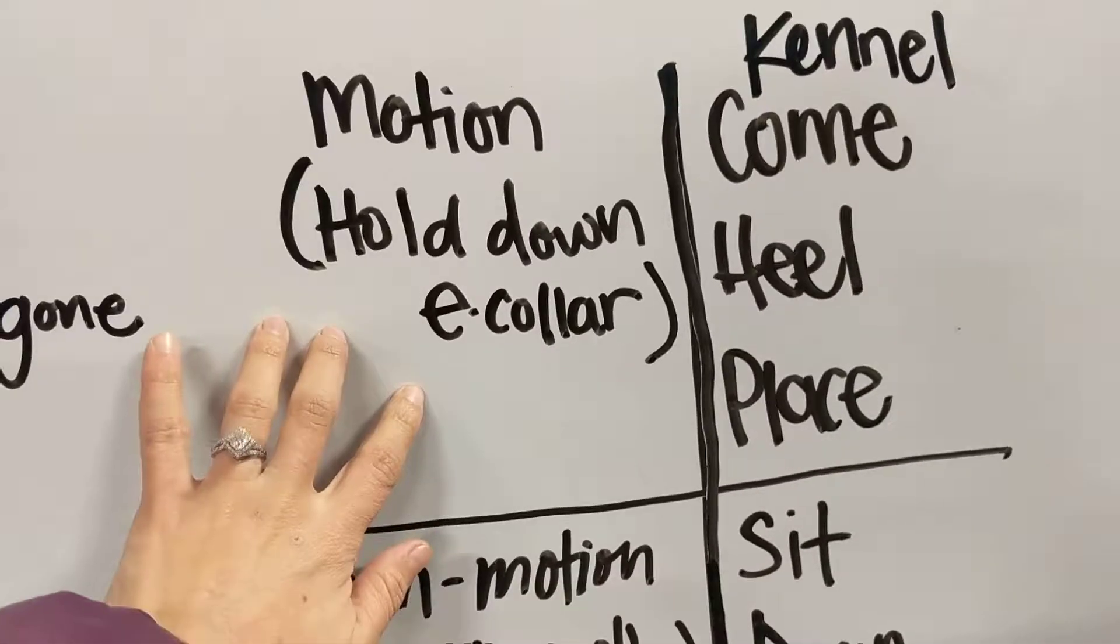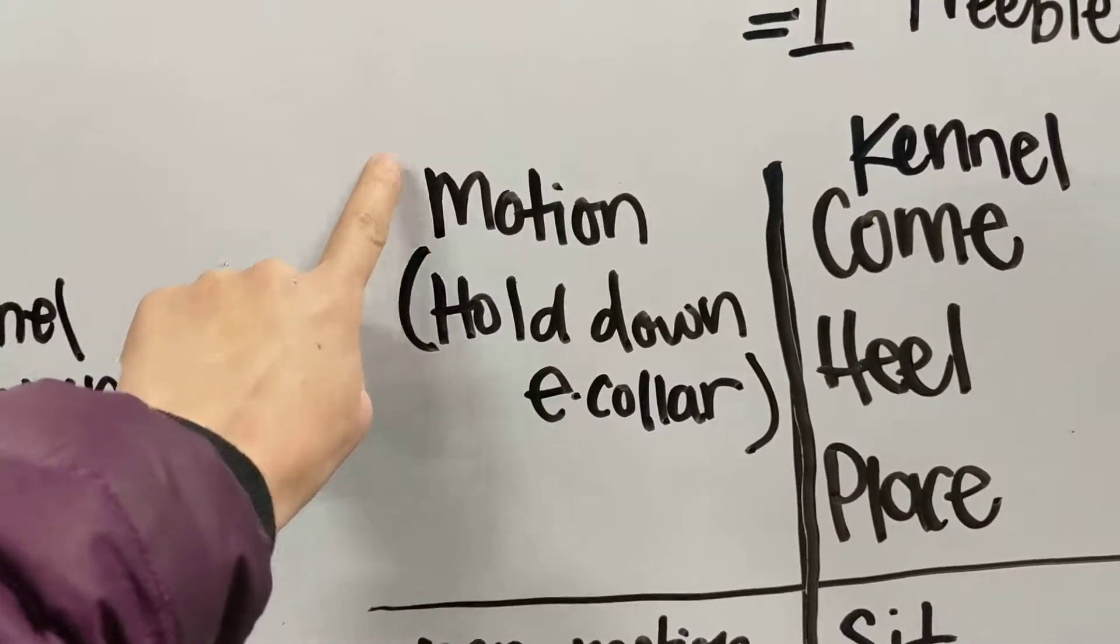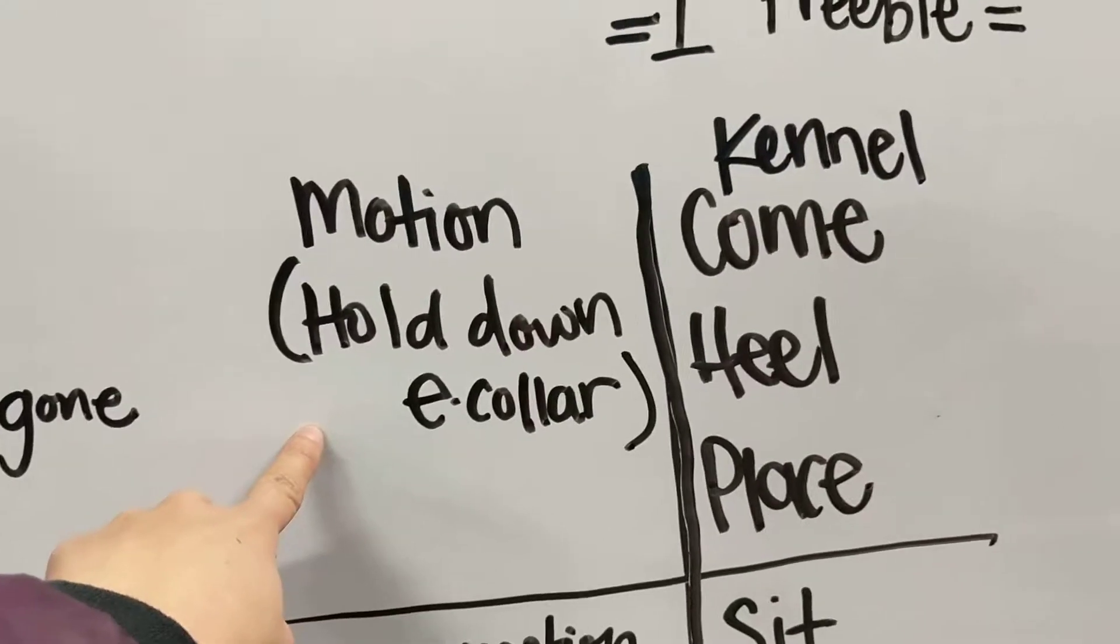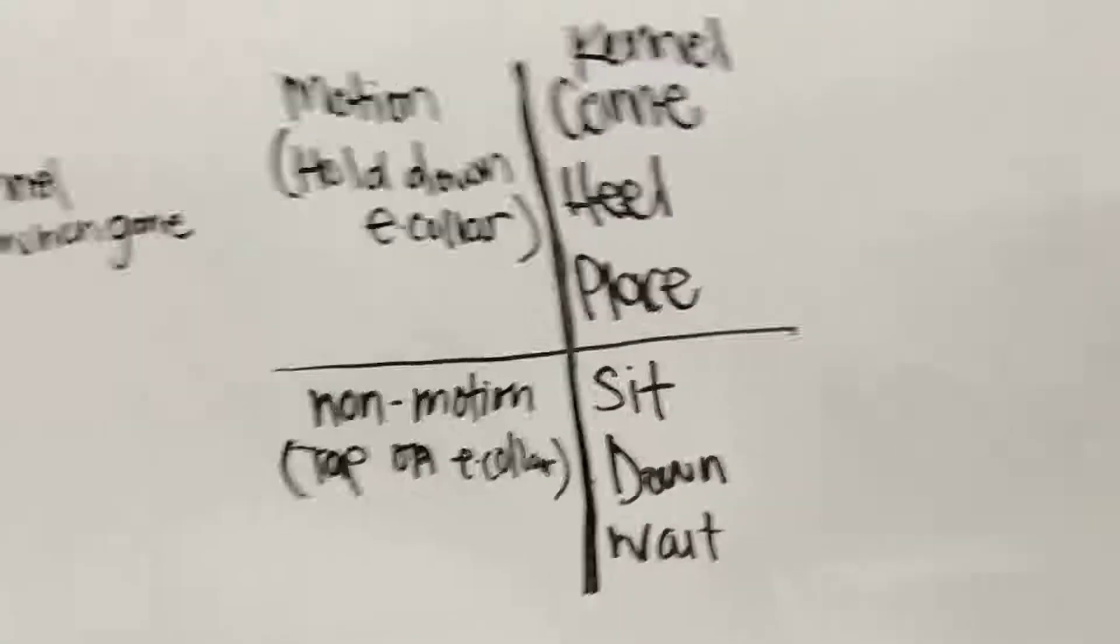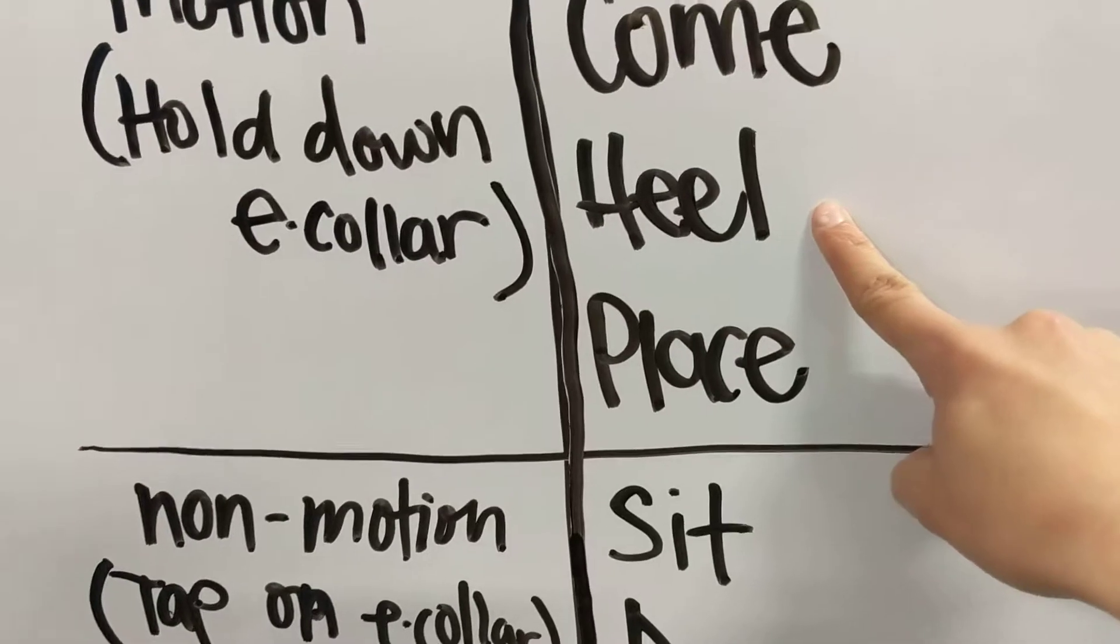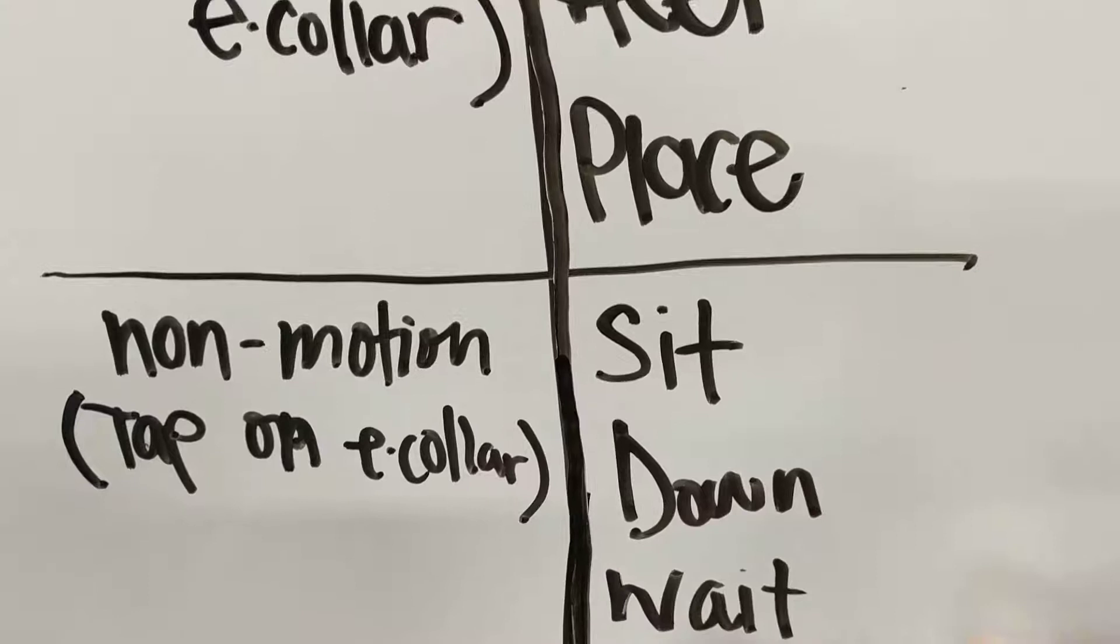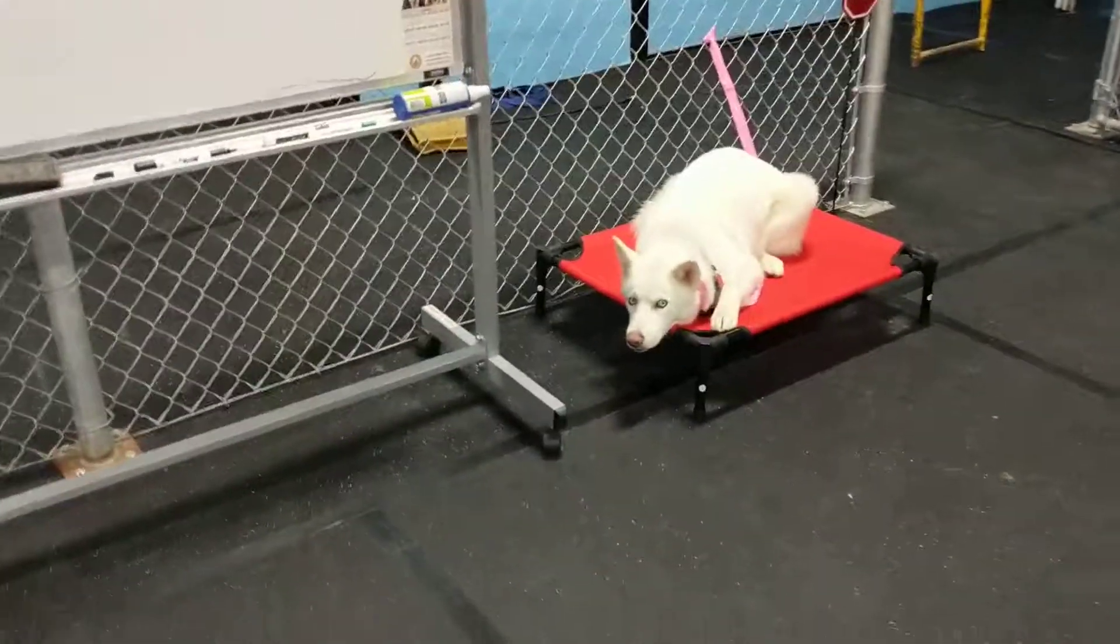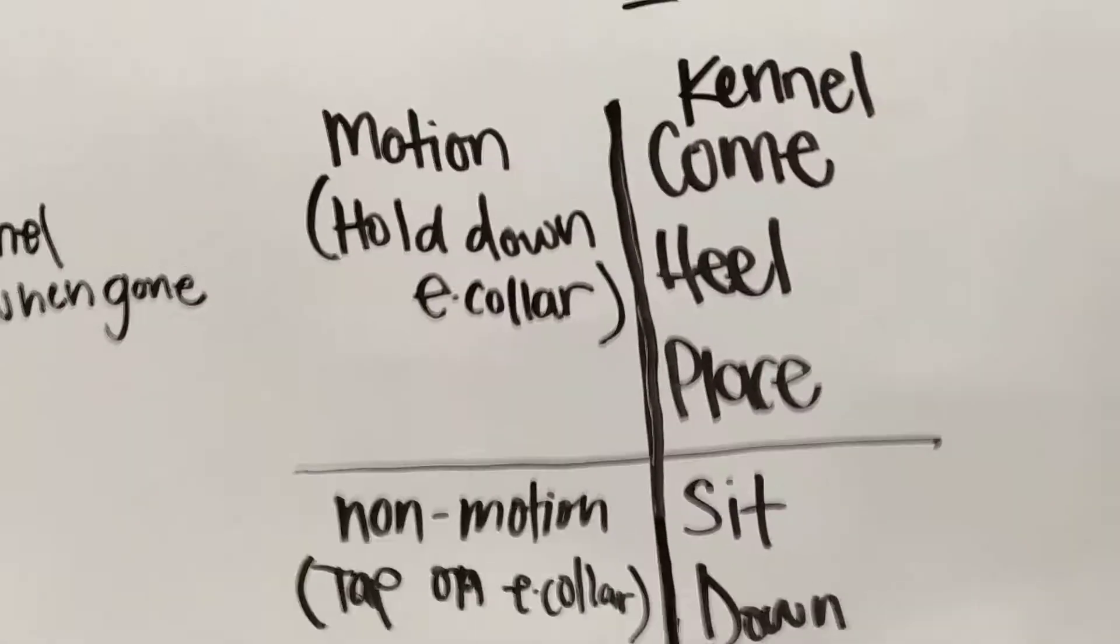So let me talk about these two areas here. I have my little chart. So anytime Coda needs to move, that is a motion command. He needs to move from A to B. I'm going to hold down the button on the e-collar. This is going to send a continuous dim on the e-collar because he needs to move in order to resolve that. So for kennel, for coming back to you, for healing - healing is walking next to you. Coda's on the left side. Cassie's on the right side. Place command. So he got off the place bed and I needed to get him back on the place bed. And so he needed to move his body onto the place bed. That's a motion command.